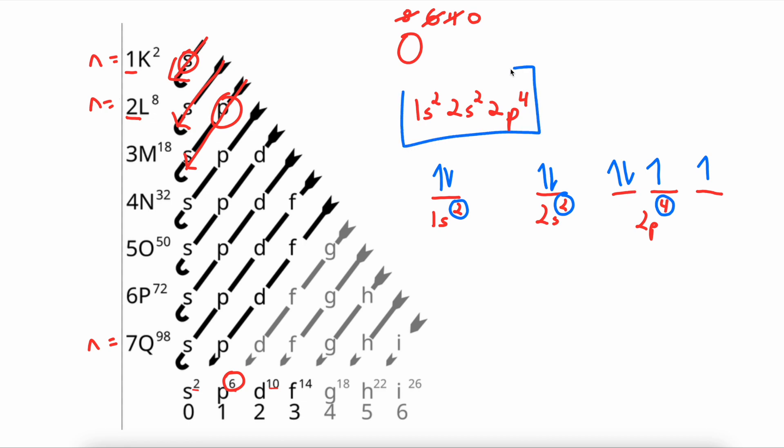This is how you would write the electron configuration. And this is how you would draw the electron configuration. To finish off with the oxygen atom, let's now draw the actual atom.